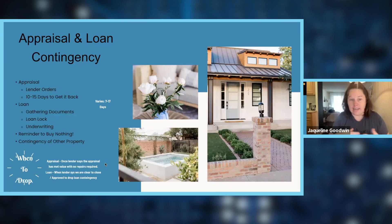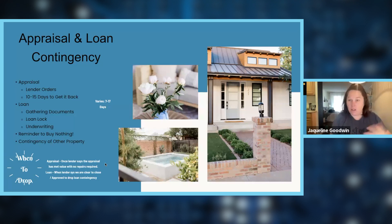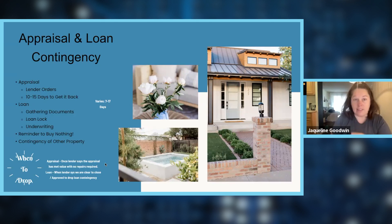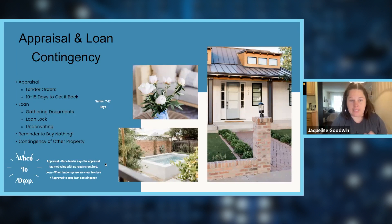The appraisal contingency is ready to be dropped once the appraiser has done the report, submitted it, and the property has met value with no repairs required — the lender will confirm when it's good to drop. For the loan contingency, the lender needs all documents in, a rate lock done, underwriting cleared, and all conditions met — they'll say they will make this loan. Once the lender gives that full approval, you can drop the loan contingency.